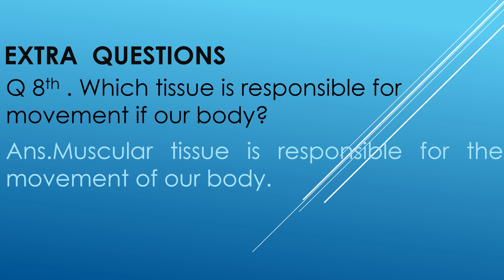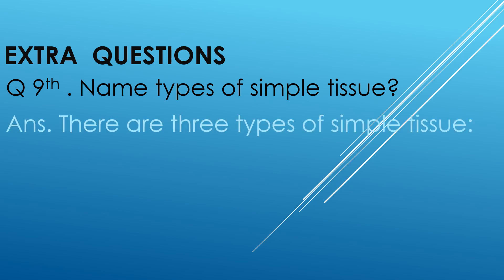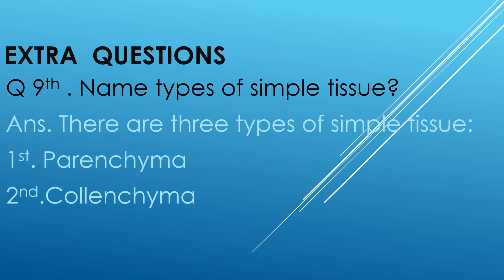Question 9. Name types of simple tissue. The answer is: there are three types of simple tissue. First, parenchyma. Second, collenchyma. Third, sclerenchyma.